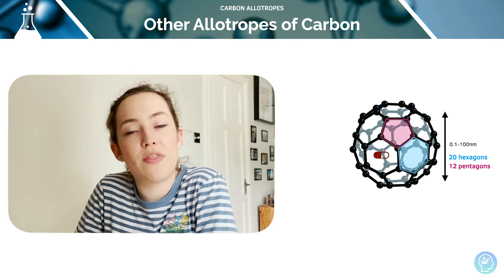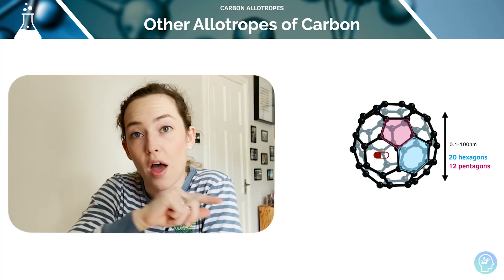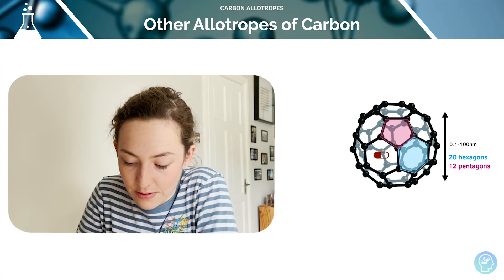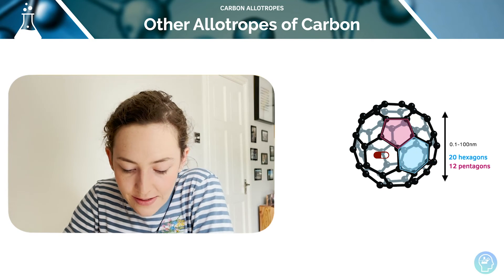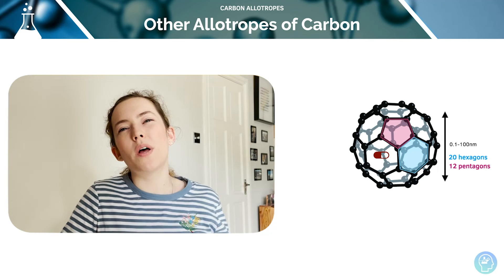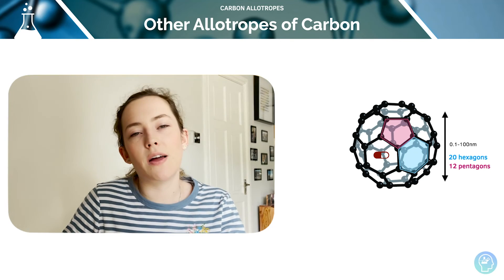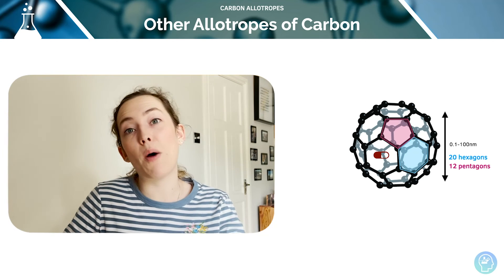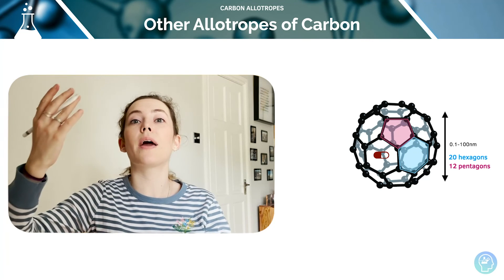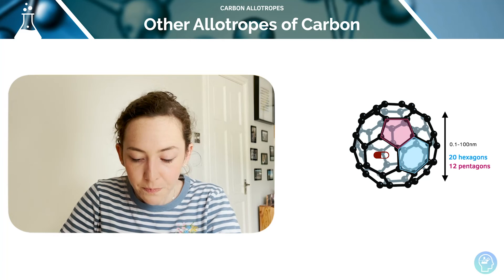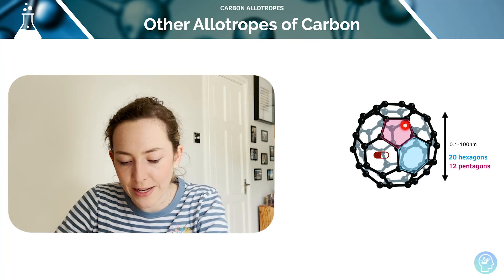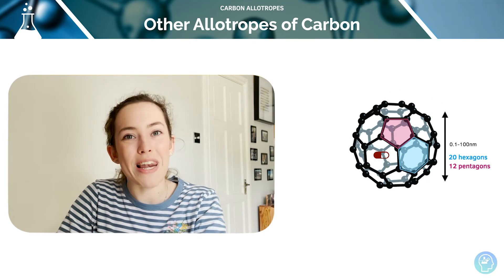Each carbon in buckminsterfullerene, as with the graphite layers, is bonded to just three other carbons. So the covalently bonded carbon atoms form rings in the shape of hexagons and pentagons — here's a pentagon and here's a hexagon. They can be used to deliver drugs to different parts of the body. Buckminsterfullerene has a relatively low sublimation point — it directly turns into a gas from its solid state without becoming a liquid first, just like iodine, which goes from solid straight to gas. This sublimation happens due to the really weak London forces, sometimes called van der Waals forces, between individual buckminsterfullerene molecules.